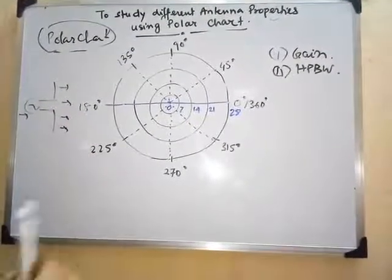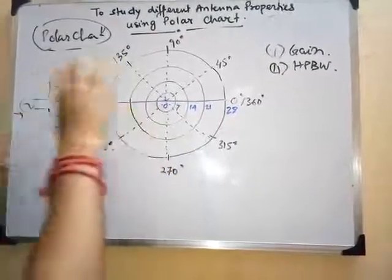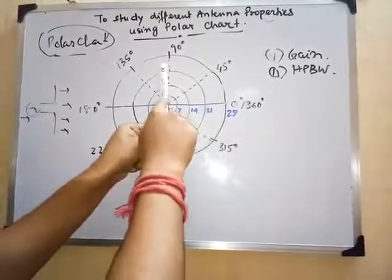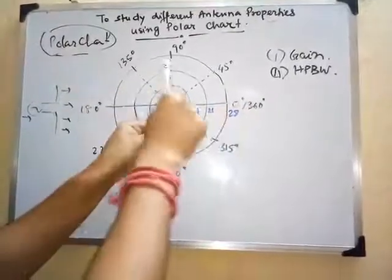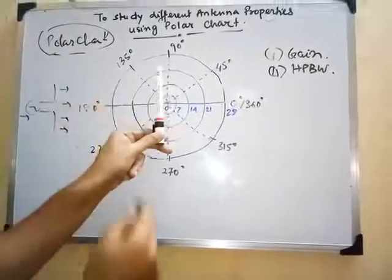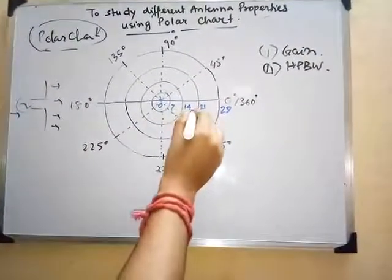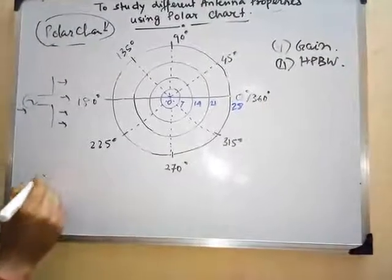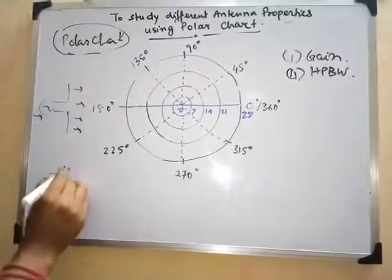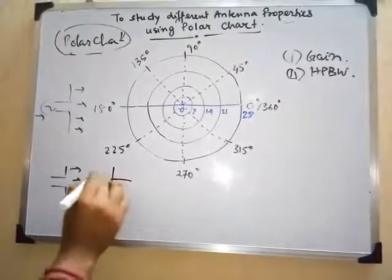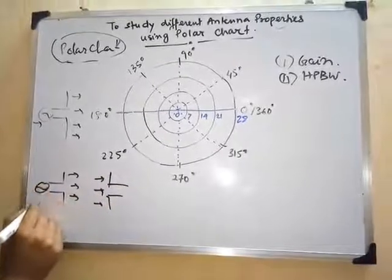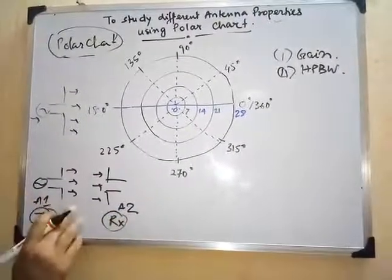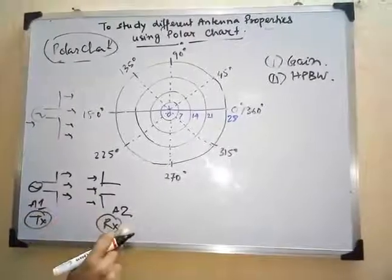We place the dipole antenna at the center of the polar chart, oriented so that the front side faces zero degrees and the back side faces 180 degrees. The radial axis values — 0, 7, 14, 21, 28 — represent the gain in dB. In the lab setup, a transmitting antenna (antenna 1) and a receiving antenna (antenna 2) are placed facing each other.